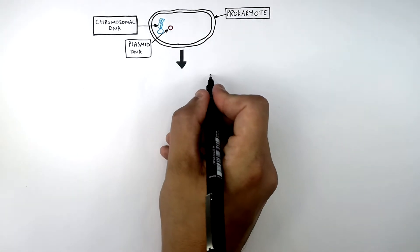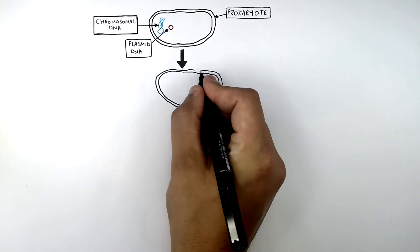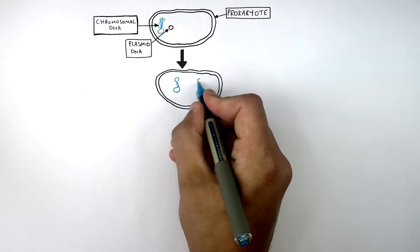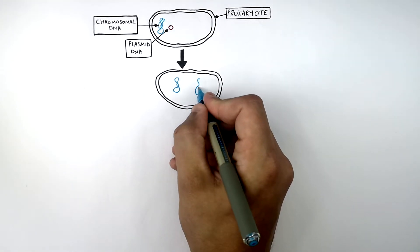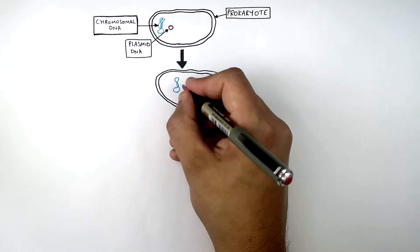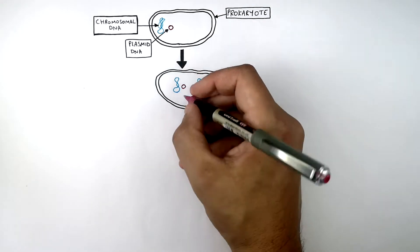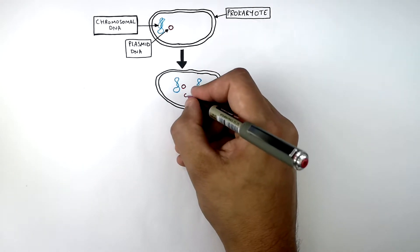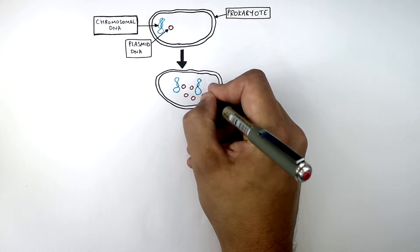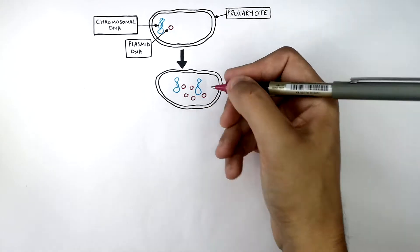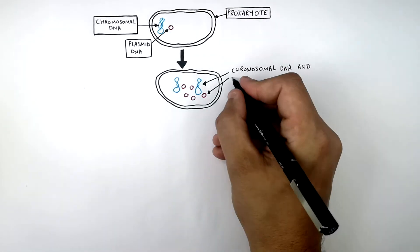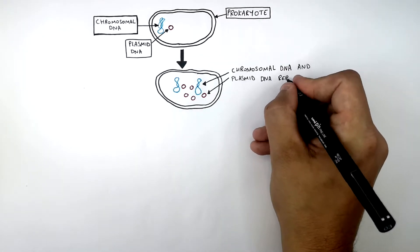The first stage of binary fission is that the chromosomal DNA replicates. And so do the DNA plasmids — as you can see here, DNA plasmids replicate into more than just one more. The chromosomal DNA and the plasmid DNA both replicate.